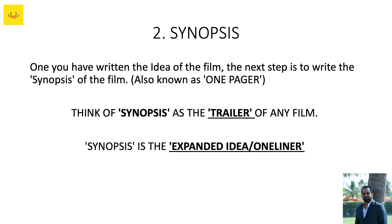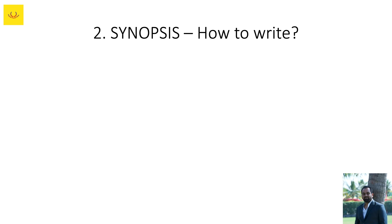Synopsis is basically expanding the one-liner that you have written in the first step. It is the expanded one-liner. The one-liner is written in one or two lines, and the synopsis is basically expanding those one or two lines into further five to ten lines.